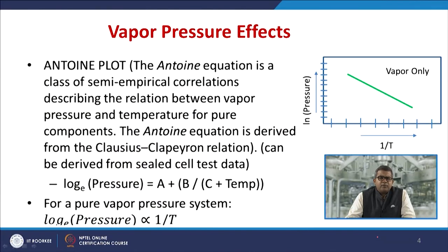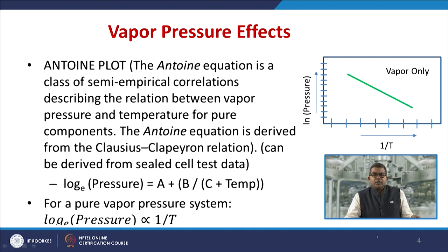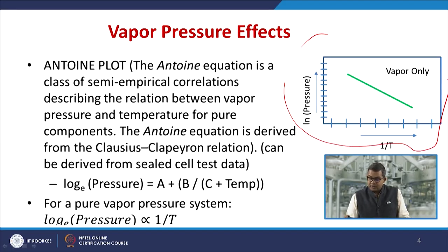The Antoine equation is derived from the Clausius-Clapeyron relations and can be derived from sealed cell data. The Antoine plot is: ln(P) = A + B/(C + T), where T is temperature. For a vapour pressure system, log P to base E is directly proportional to 1/T, and you can plot this log-Antoine plot with pressure.